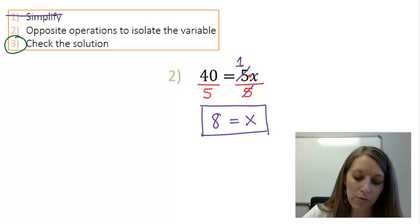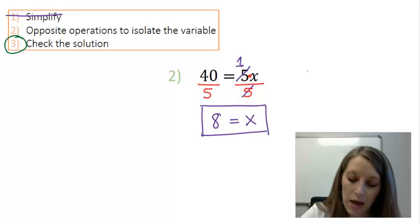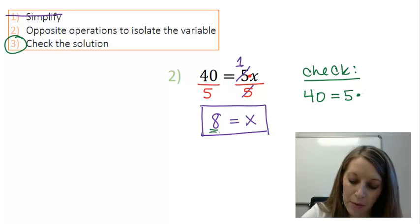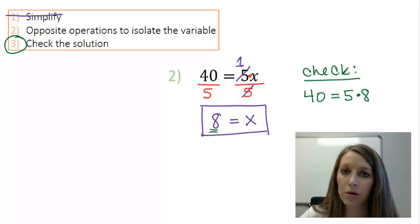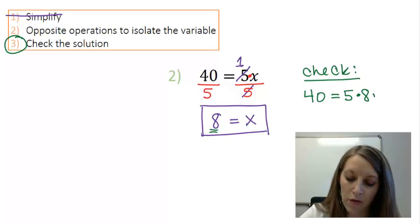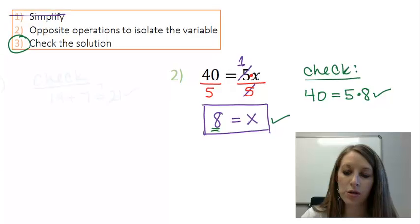Moving on to step number 3, checking my solution. I want to know, is 40 equivalent to 5 times? And I plug 8 back into my variable. Of course it is. So, of course, I have the correct solution here.